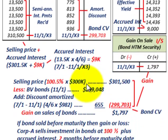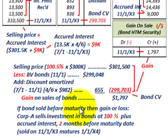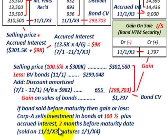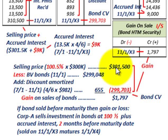If the bond is sold before its maturity, a gain or loss must be calculated. Corporation A sells this investment at 100.5% plus accrued interest, two months before the maturity date — sold on 11/1/X3, matures 11/1/X4. We determine the selling price: 100.5% of the par or maturity value of $300,000, giving a selling price of $301,500.